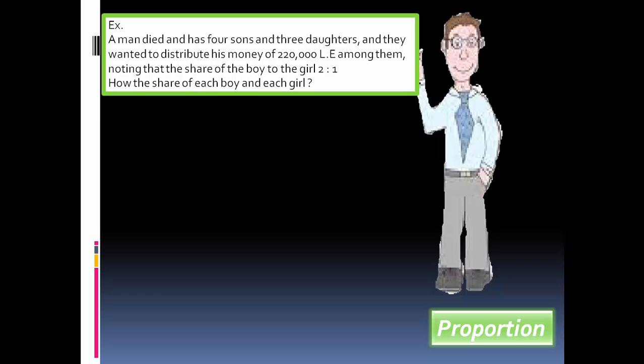Example: A man died and had 4 sons and 3 daughters, and he wanted to distribute his money of 220,000 among them, noting that the share of the boy to the girl is 2 to 1.